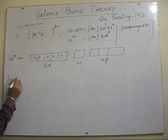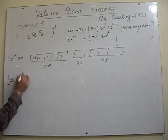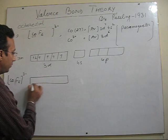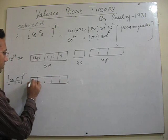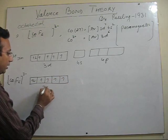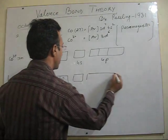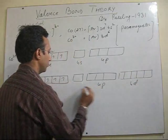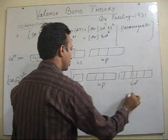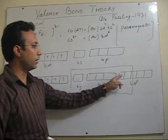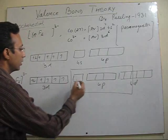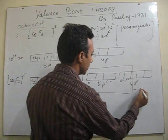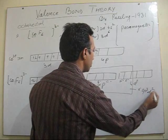And the complex is found to be paramagnetic in nature. So inner d orbitals will not be used. According to VBT, we will be using outer d orbitals. So this is the hybridization. 1S, 3P and 2D will be used for hybridization. So all the fluoride ions will donate their electron pair in these vacant orbitals, which are 6S, P3, D2.